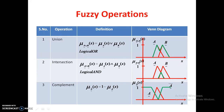These are the fuzzy operations — union, intersection, and complement. Union means we identify the maximum value out of mu A of x and mu B of x. For intersection, we identify the minimum value. For complement, we subtract the membership value from 1, or full membership.